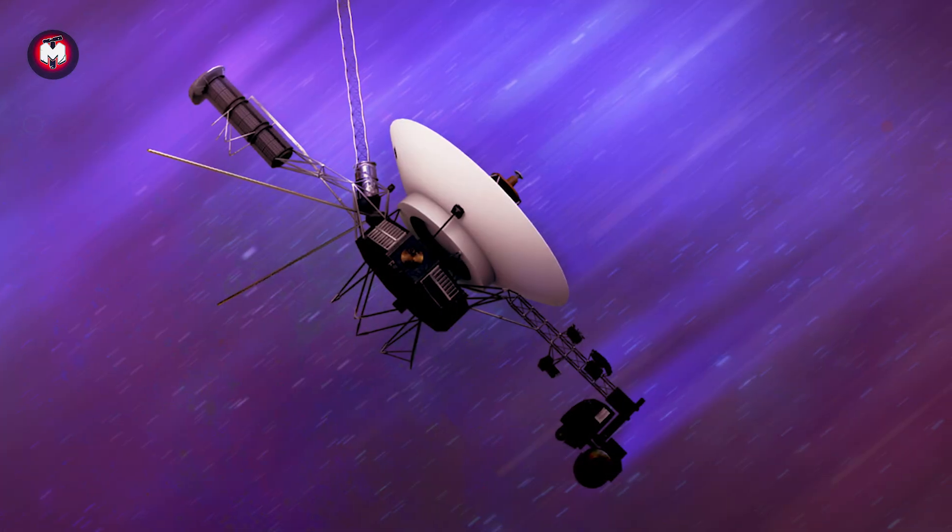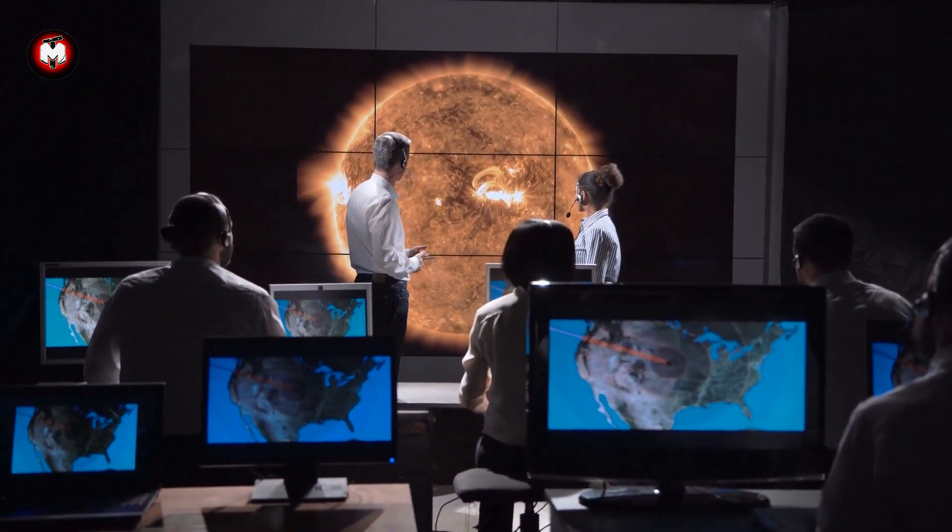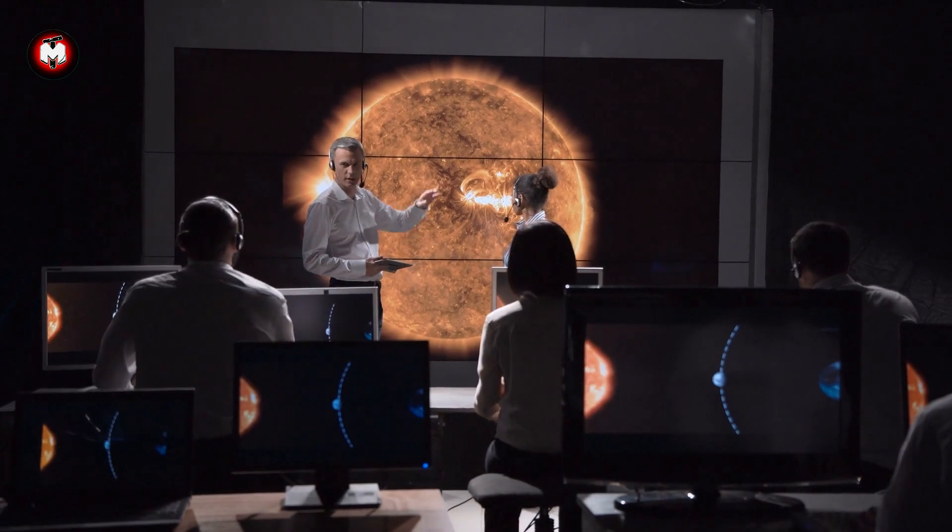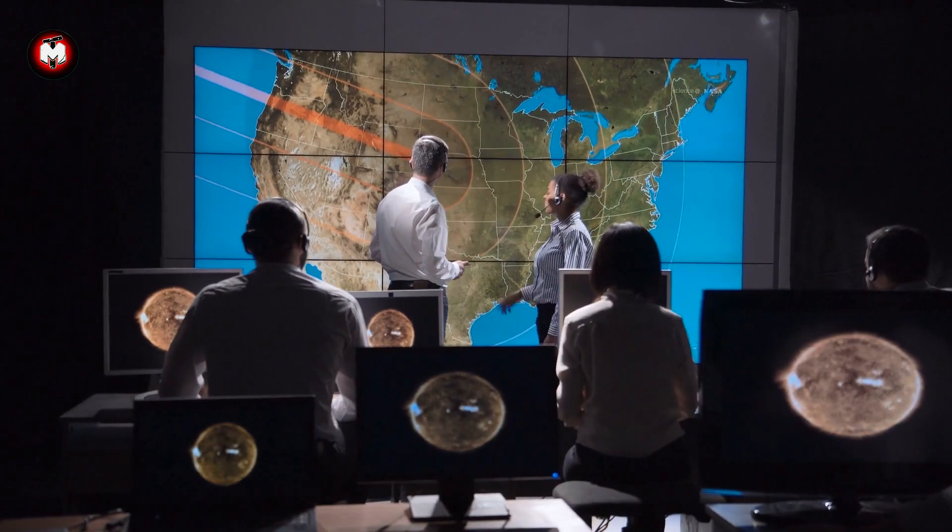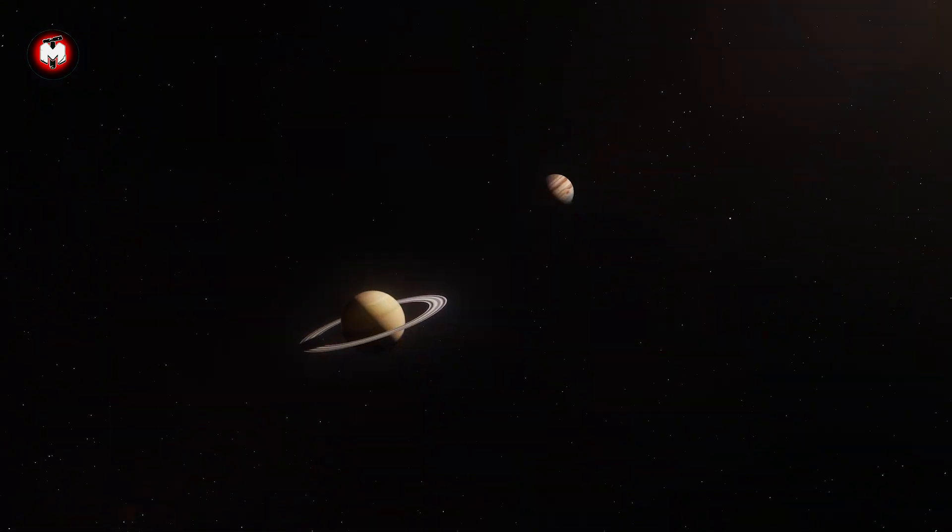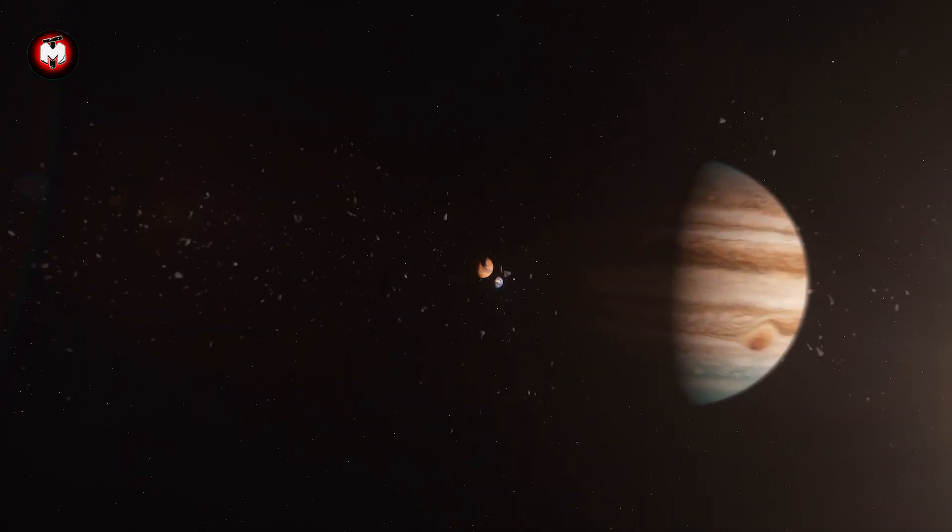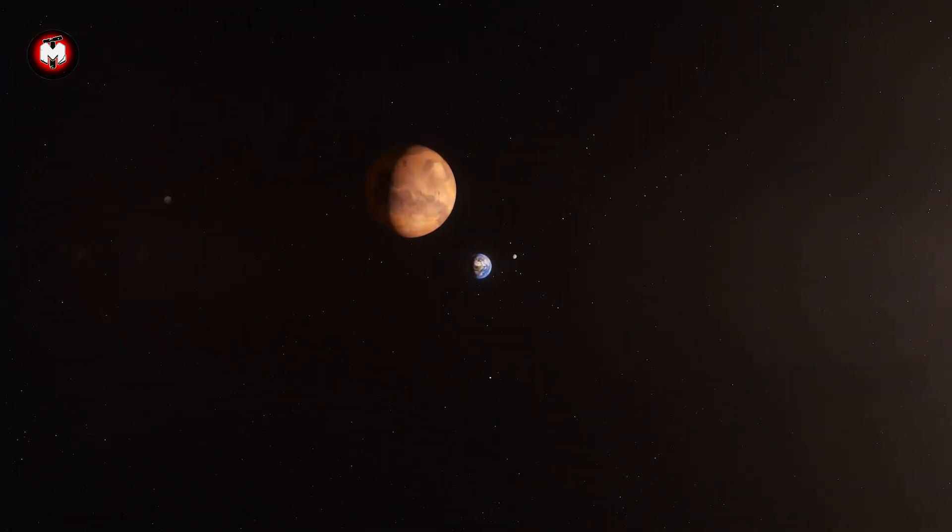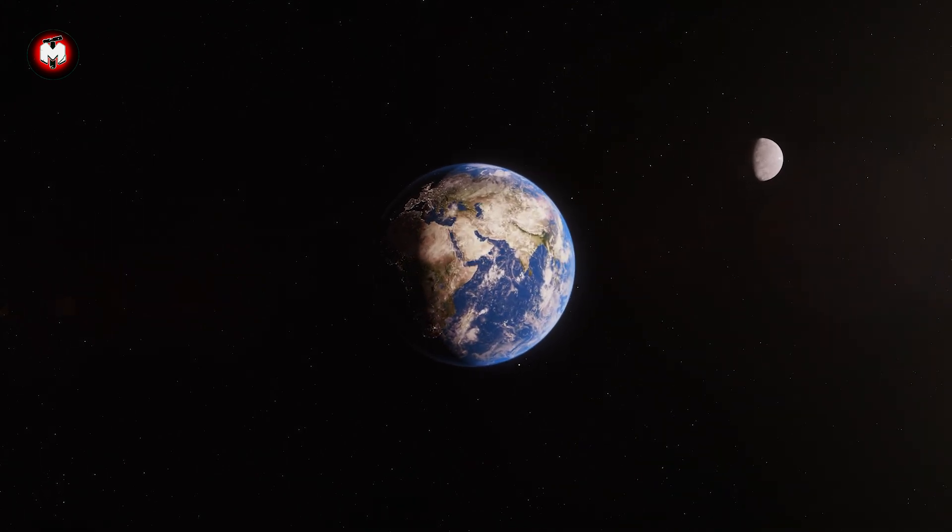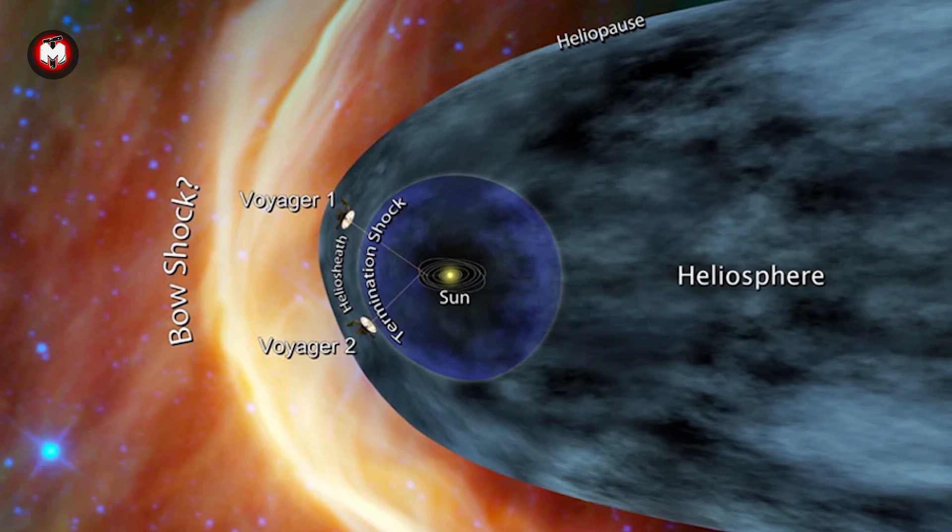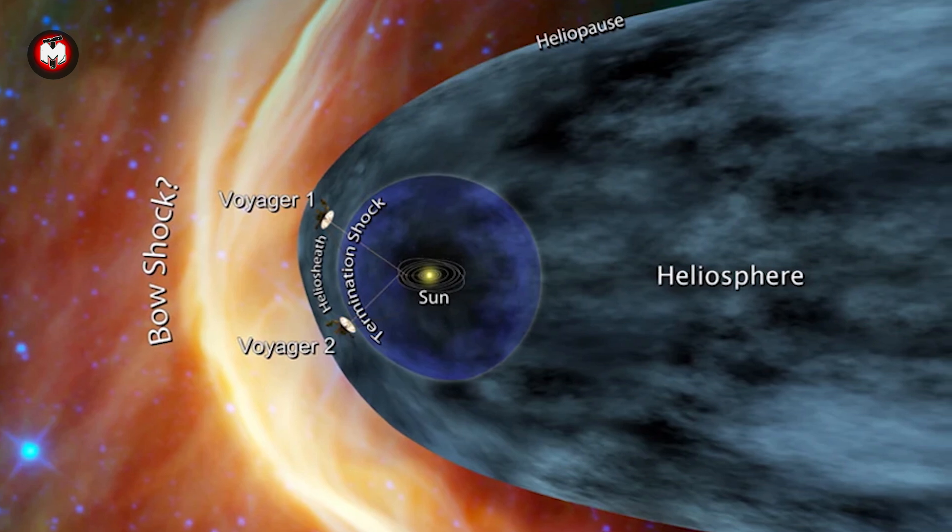By the 1990s, both Voyagers had completed their primary missions, but they were far from done. NASA realized these hardy explorers could attempt something no human-made object had ever done: leave the solar system entirely. This is where our story gets really interesting. You see, our solar system isn't just the sun and planets. It's surrounded by an invisible bubble called the heliosphere, created by the solar wind—a stream of charged particles flowing out from the sun at over a million miles per hour. Somewhere out there, this solar wind crashes into the interstellar medium, the stuff between stars.